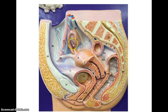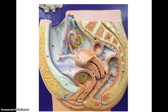Number one is the ovary, and this is where the female eggs will develop. Once a month, one will be ovulated into the oviducts, number two. Number three is the fimbriae — remember there's a gap between the ovary and the fimbriae — and those little hairs kind of pull the egg towards the oviduct.